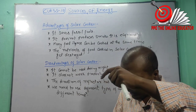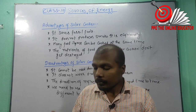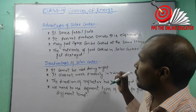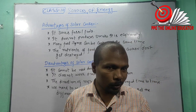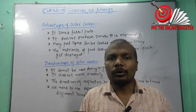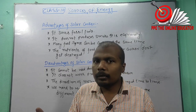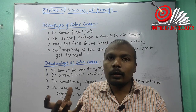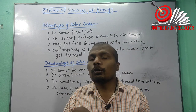Third advantage: many food items can be cooked at the same time — we can cook different types of items together in one solar cooker. Fourth important point: the nutrients of food cooked in a solar cooker don't get destroyed. In a pressure cooker, boiling causes steam to escape, destroying nutrients. That doesn't happen with a solar cooker.